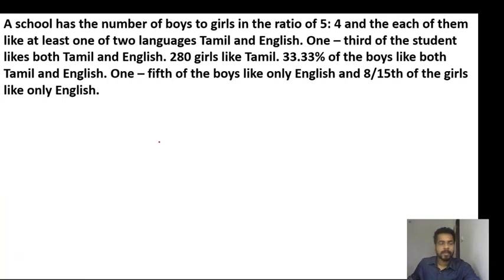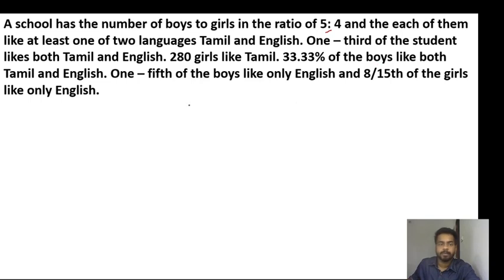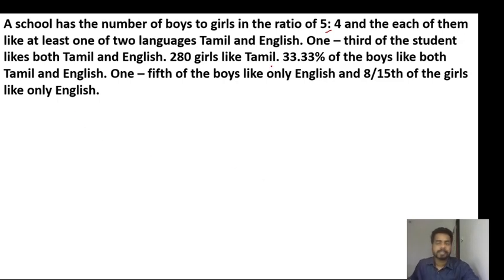The question is: a school has number of boys to girls in the ratio of 5 is to 4. Each of them likes at least one of two languages — Tamil and English. One third of the students like both Tamil and English, and 280 girls like Tamil. 33.3% of boys like both Tamil and English, one fifth of the boys like only English, and 8 by 15 of girls like only English.